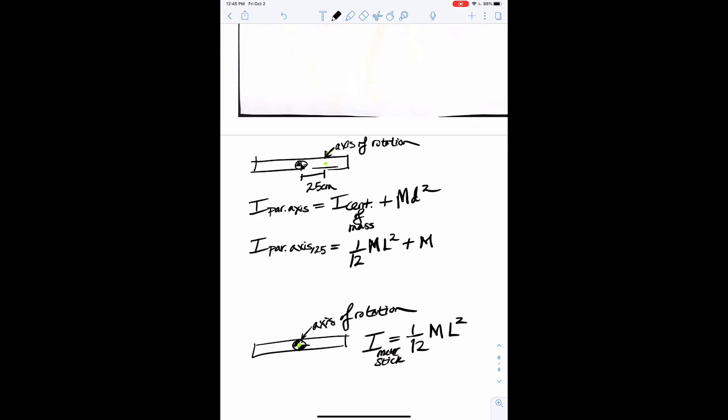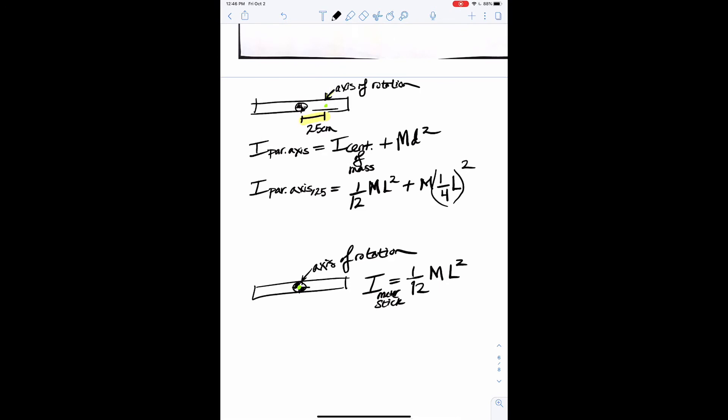So we transfer that down there. We can then call this I parallel axis, comma 25. Equals I center of mass, which is the 1/12 ML squared, plus the mass of the meter stick, which is still capital M, times D squared. Now what's D? Well, D is the distance, 25 centimeters. But I don't like that. I want to stick with the variables I have. I really don't want to use any numbers here. I think it's more elegant if we don't.